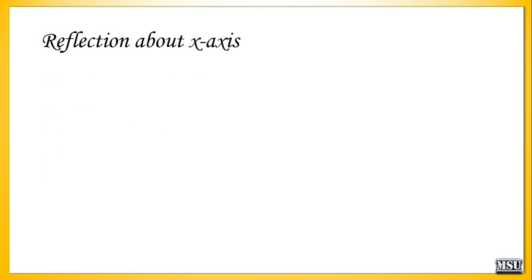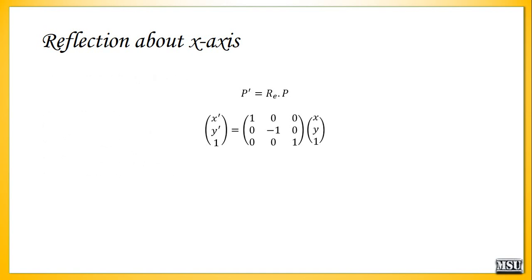Reflection about the x-axis: p' equals the reflection matrix into p, the original point. The x values remain the same, and the y value is converted to a negative value. So x' equals x and y' equals minus y. Then the object will be located at the second quadrant.